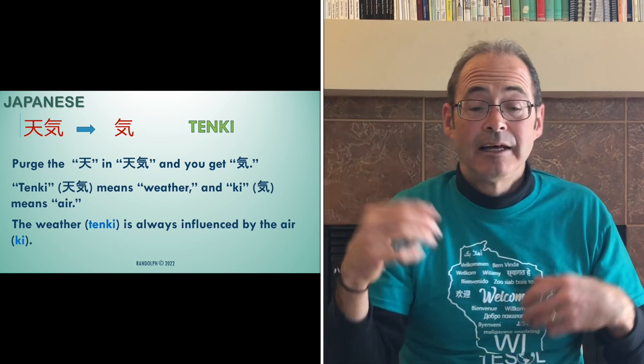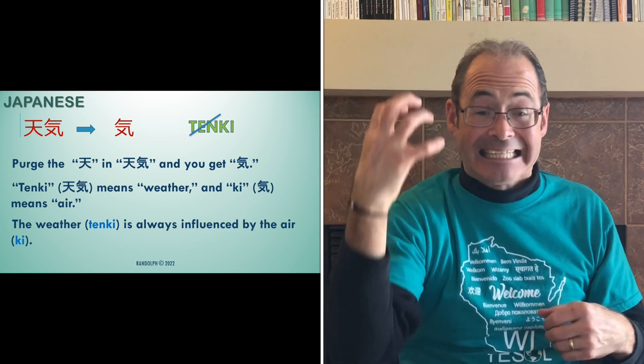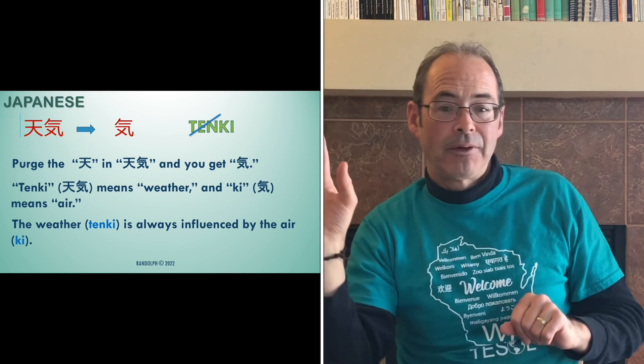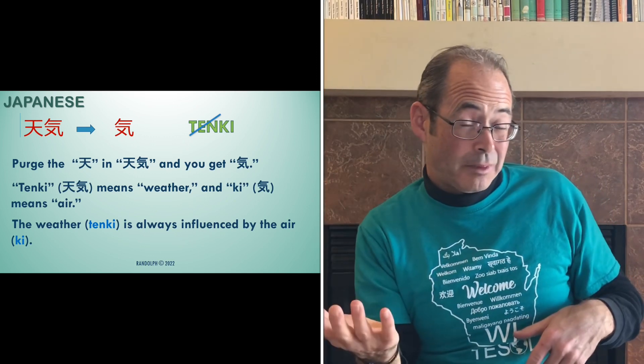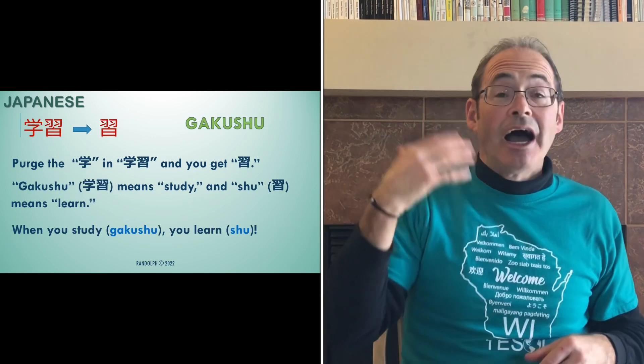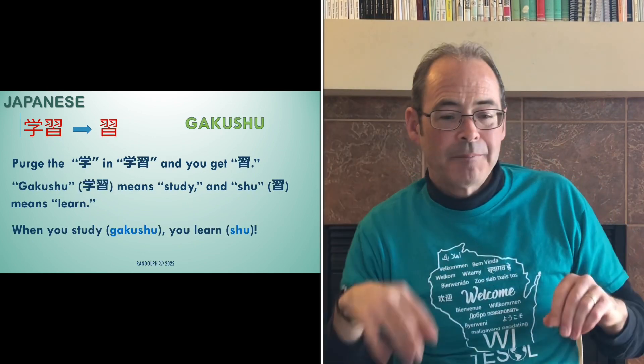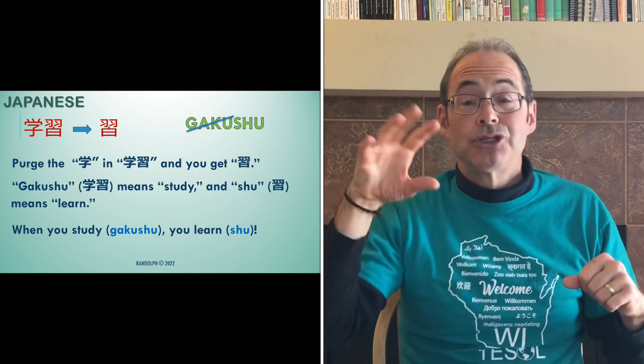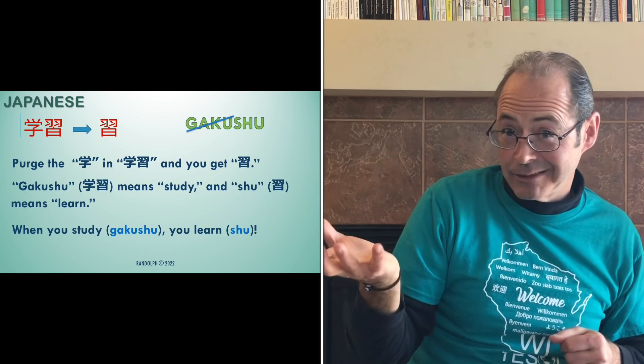And then Japanese, which is also completely different, but you can still do this because they use so many different kinds of characters in their language with special meanings. For example: 'tenki' and 'ki.' Purge the 'ten' in 'tenki' and you get 'ki.' 'Tenki' means weather, and 'ki' means air. The weather is always influenced by the air or air pressure — again, there's a neat connection there. 'Gakushu' goes to 'shu': purge the 'gaku' in 'gakushu,' and you're left with 'shu.' 'Gakushu' means study, and 'shu' means learn. When you study something, you learn it. A really neat connection. Pretty neat, right?